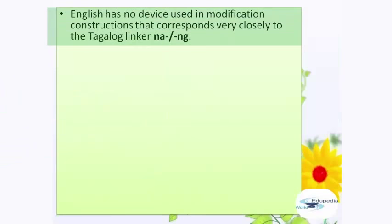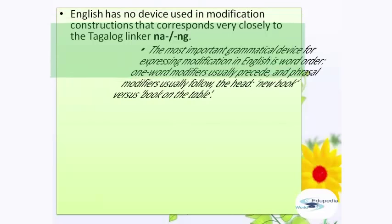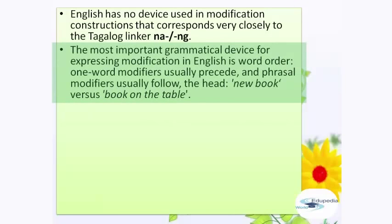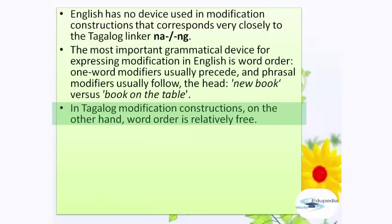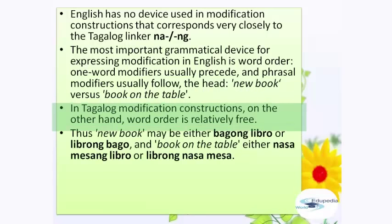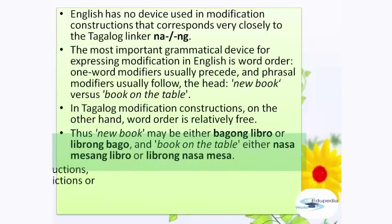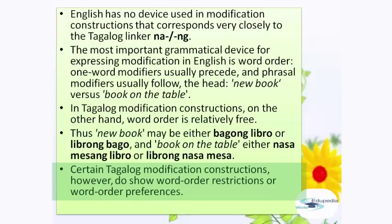English has no device used in modification constructions that corresponds very closely to the Tagalog linker na or nang. The most important grammatical device for expressing modification in English is word order: one-word modifiers usually precede, and phrasal modifiers usually follow, the head — 'new book' versus 'book on the table.' In Tagalog modification constructions, on the other hand, word order is relatively free. Thus 'new book' may be either 'bagong libro' or 'librong bago,' and 'book on the table' either 'nasang mesang libro' or 'librong nasa mesa.' Certain Tagalog modification constructions, however, do show word order restrictions or preferences.